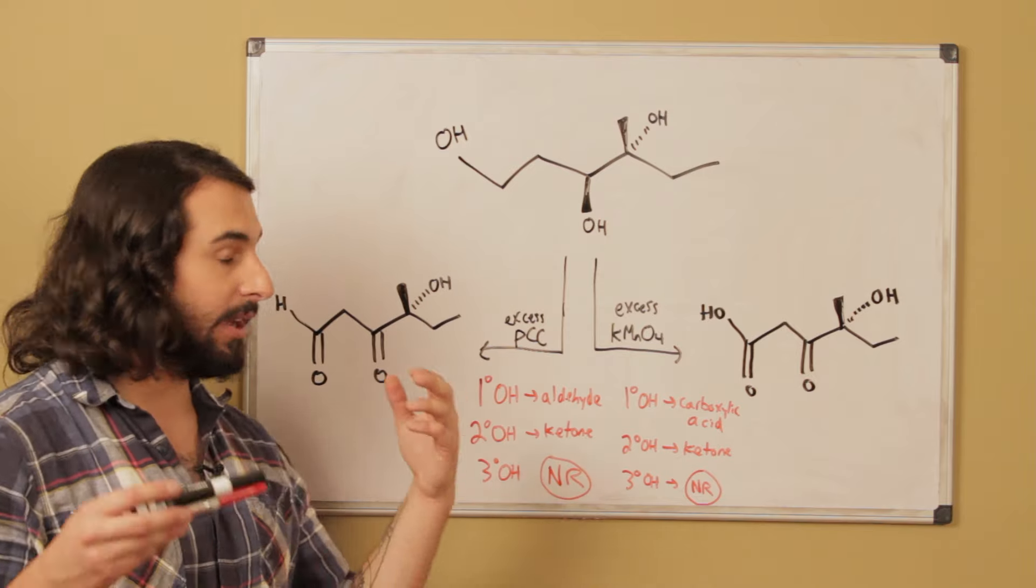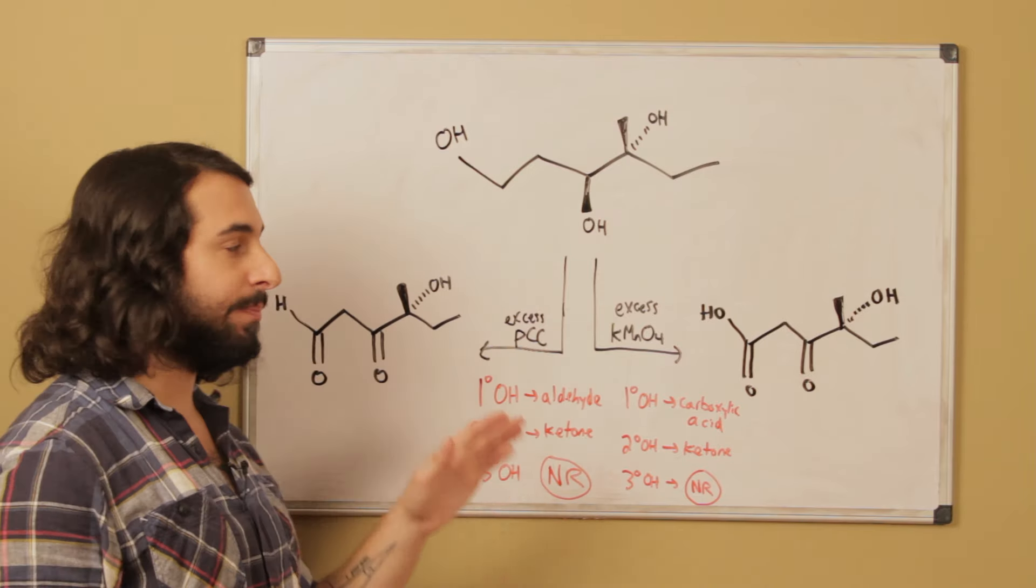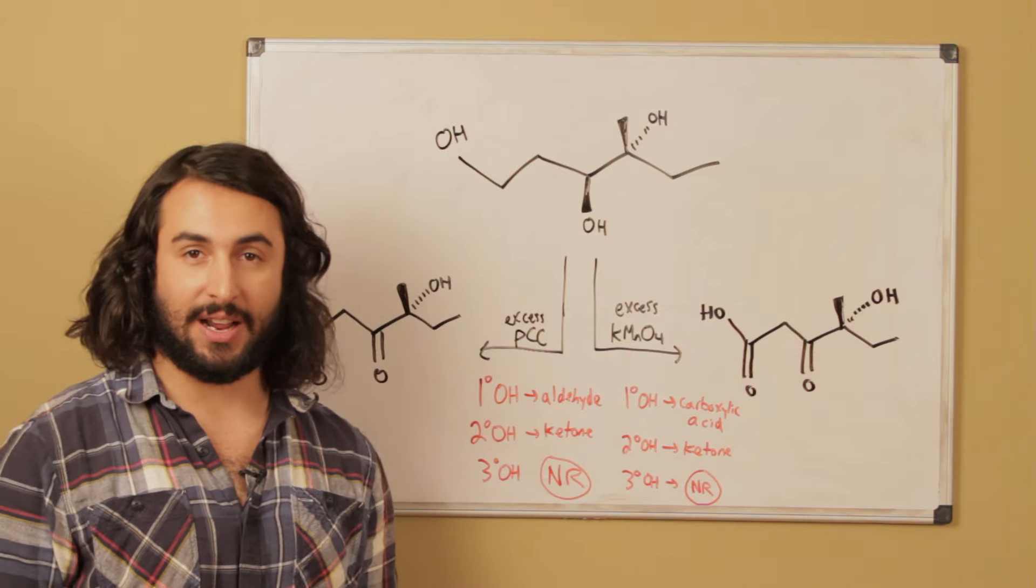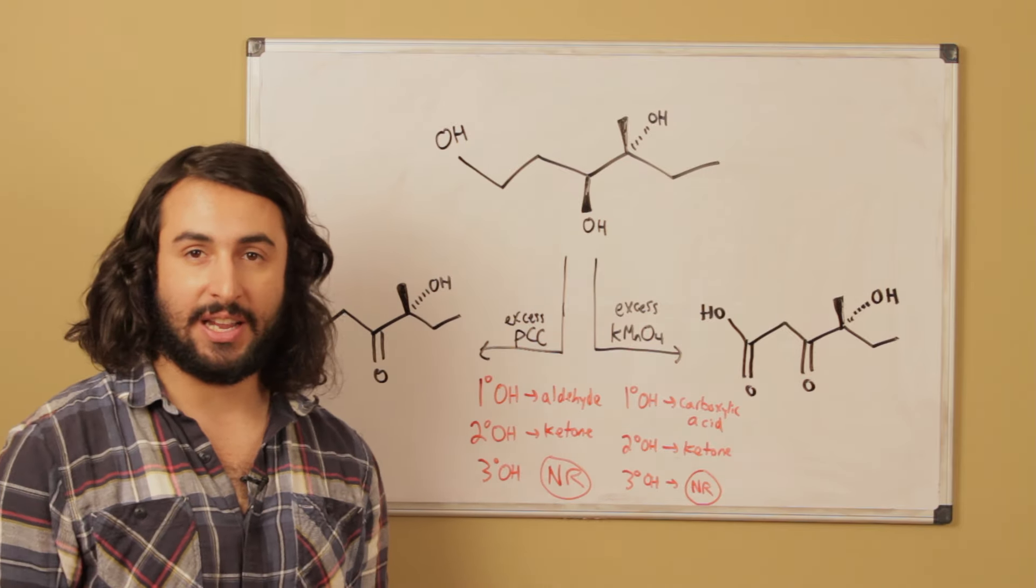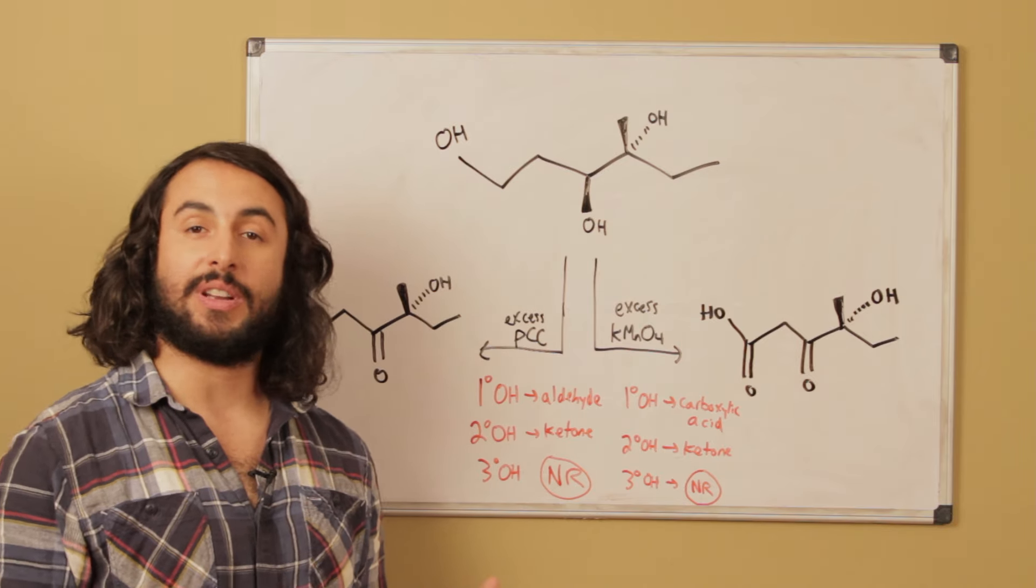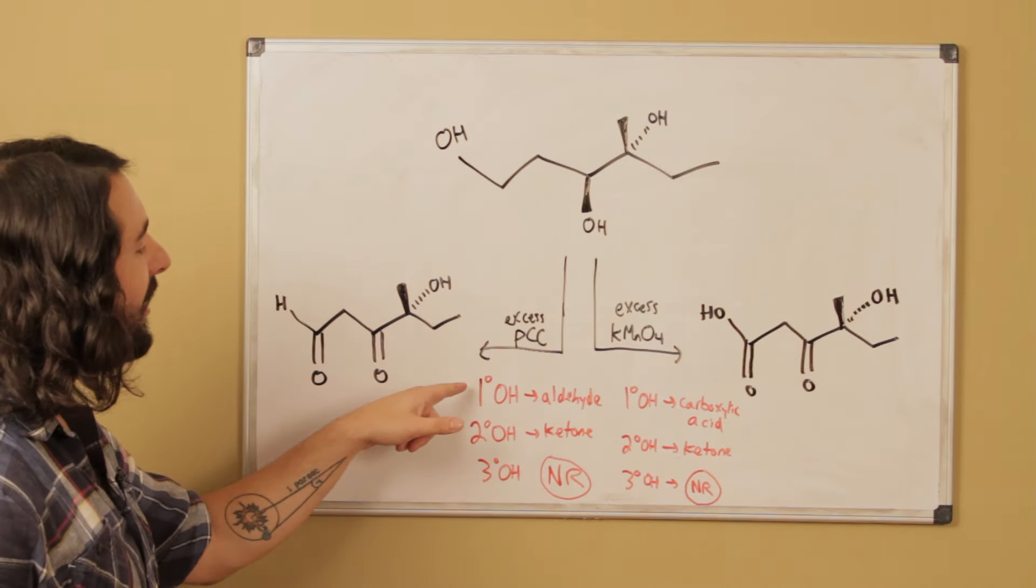Let's compare PCC, pyridinium chlorochromate, and KMNO4, potassium permanganate. We have to understand that PCC is a weaker oxidizing agent and potassium permanganate is a stronger oxidizing agent.